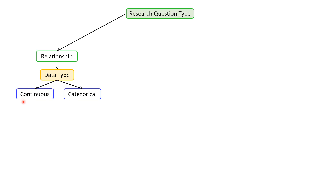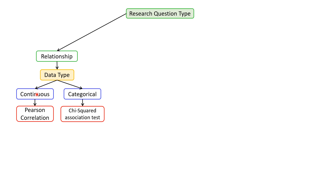Based on the purpose of data analysis, if we want to find the relationship between variables, the next thing to consider is the data type, which can be broadly divided into categorical and continuous. If it is continuous, we can apply Pearson correlation. If it is categorical data, we can apply the chi-squared association test.